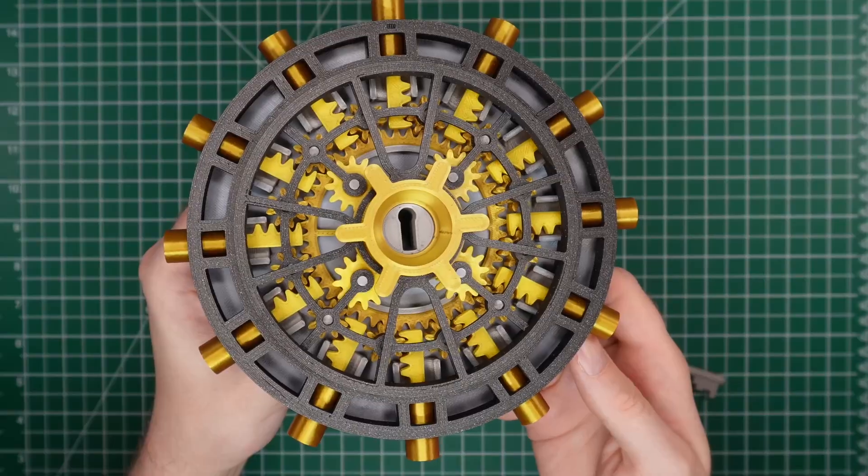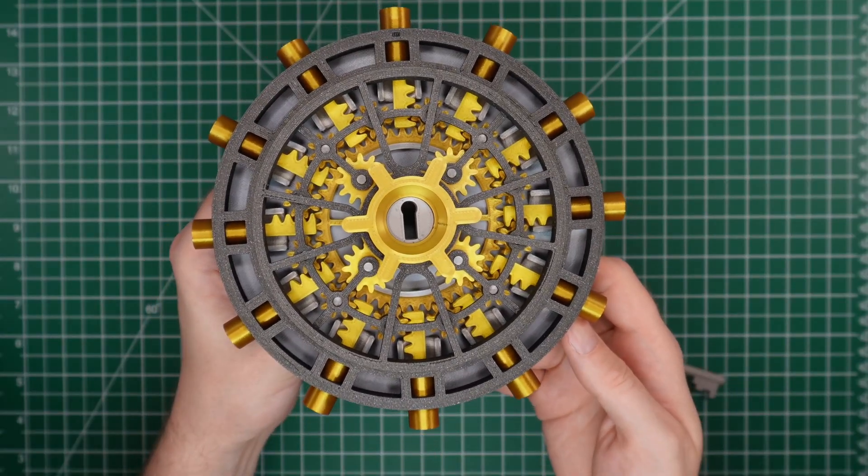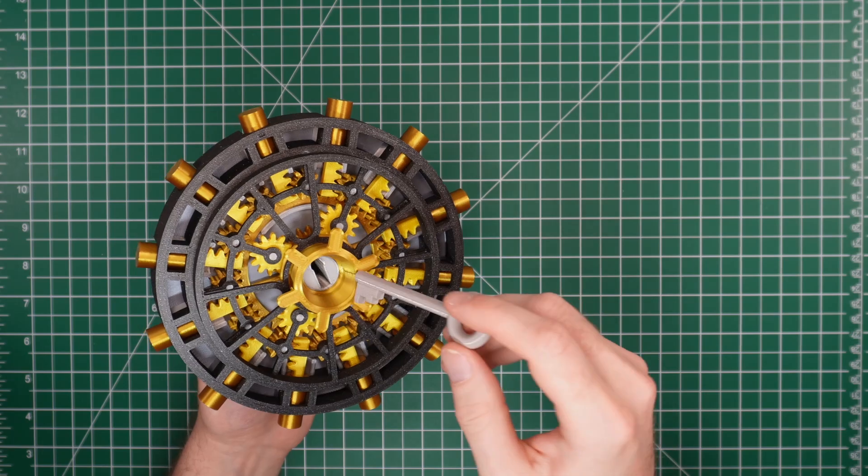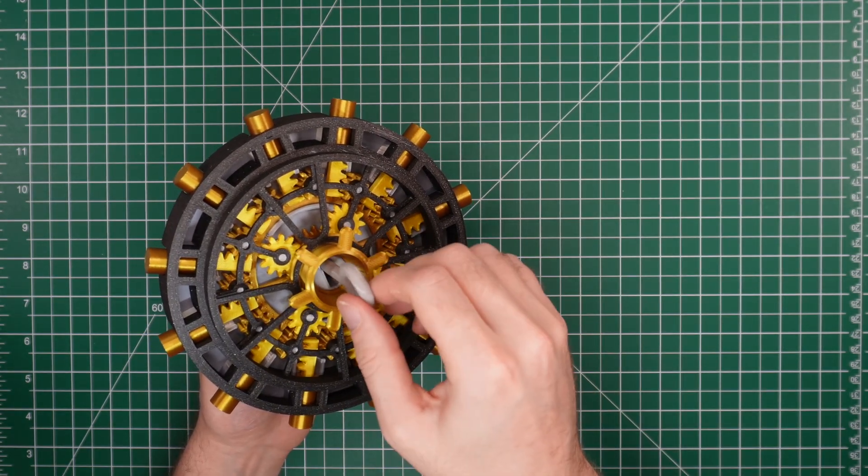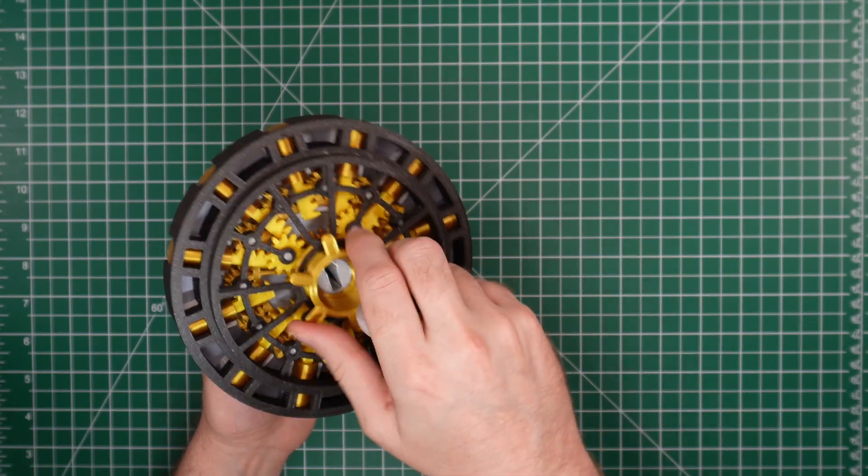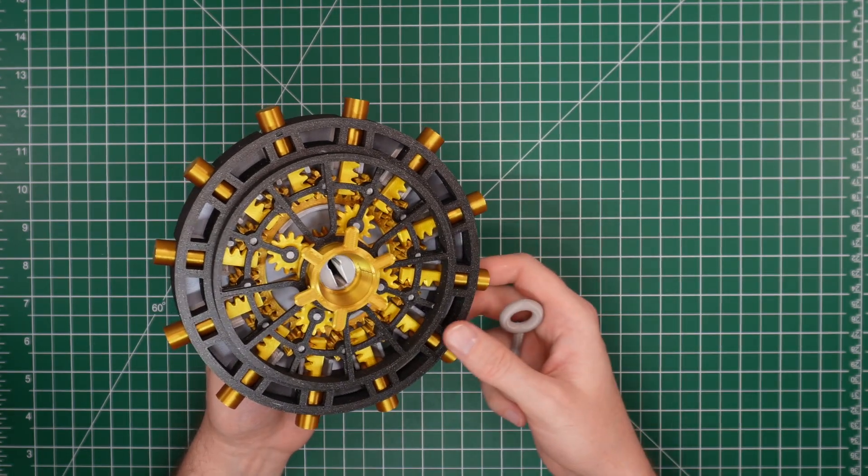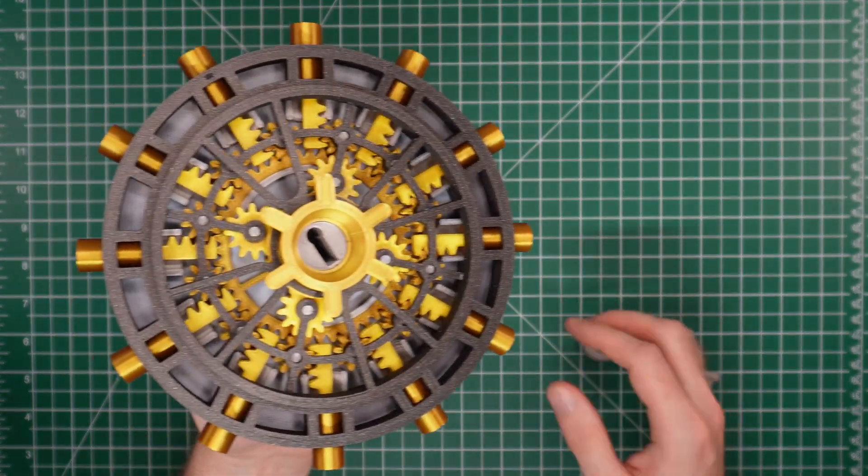This project is actually my second attempt at creating a fully printed vault with a functional lock. My initial design featured a round door, but it became clear that the mechanism faced excessive friction due to the complexity of having numerous gears and moving parts.